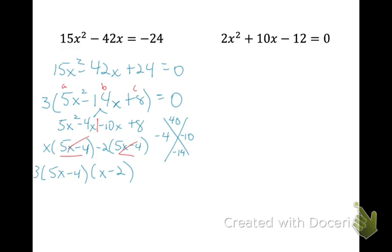I'm going to bring down my 3, so there I have it completely factored. Now to solve, I can divide my 3 away, and then set each of these equal to 0. So I'm going to add my 4 and divide by 5. So my first answer is 4 fifths, and then I will add my 2. So my second answer is positive 2.